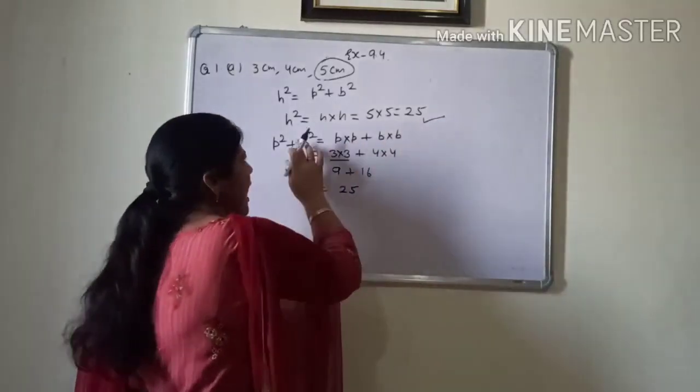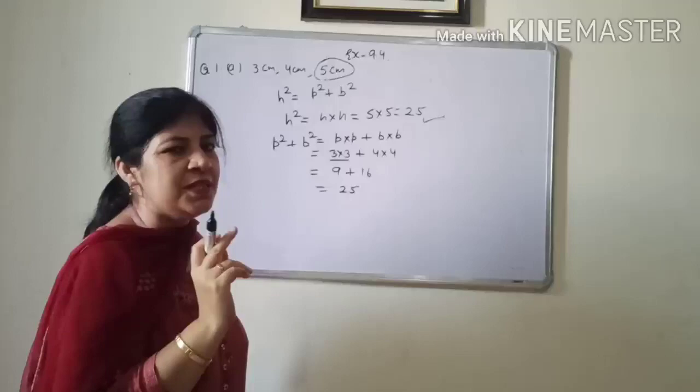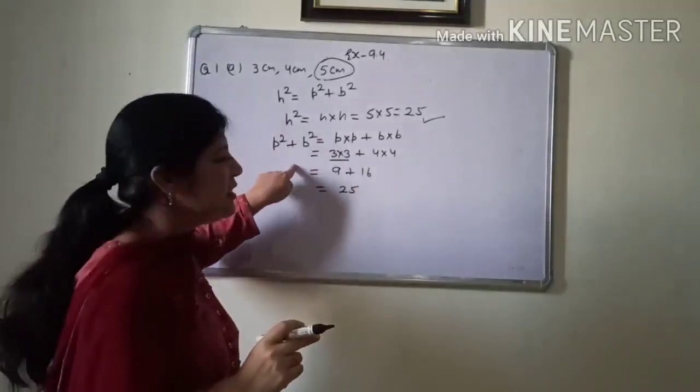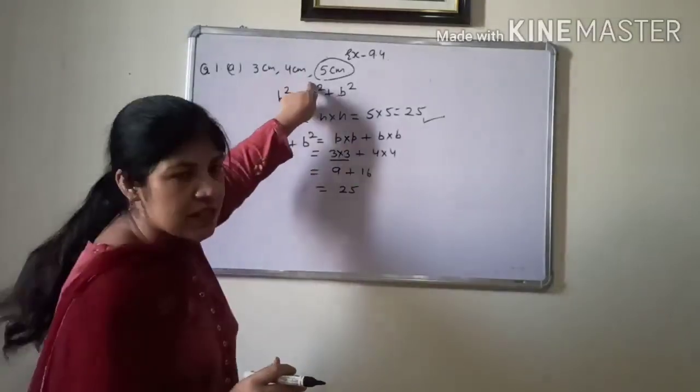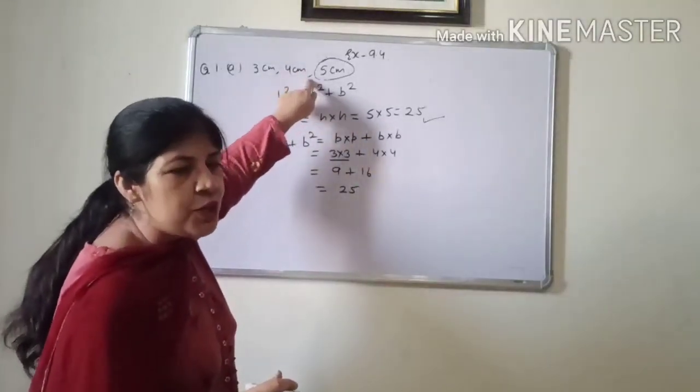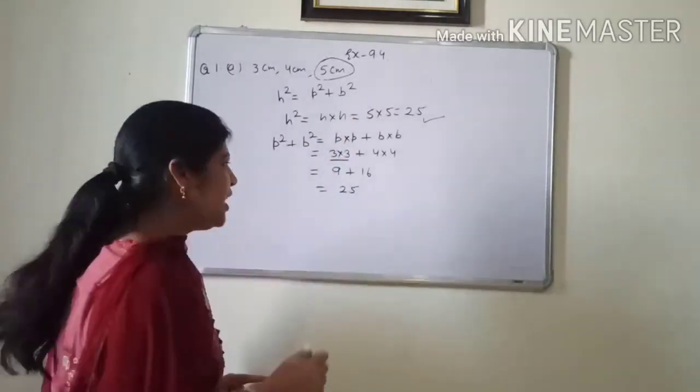Now, you can say h square is equal to p square plus b square. Means left hand side is equal to right hand side. It means the given sides are the sides of a right angle triangle.